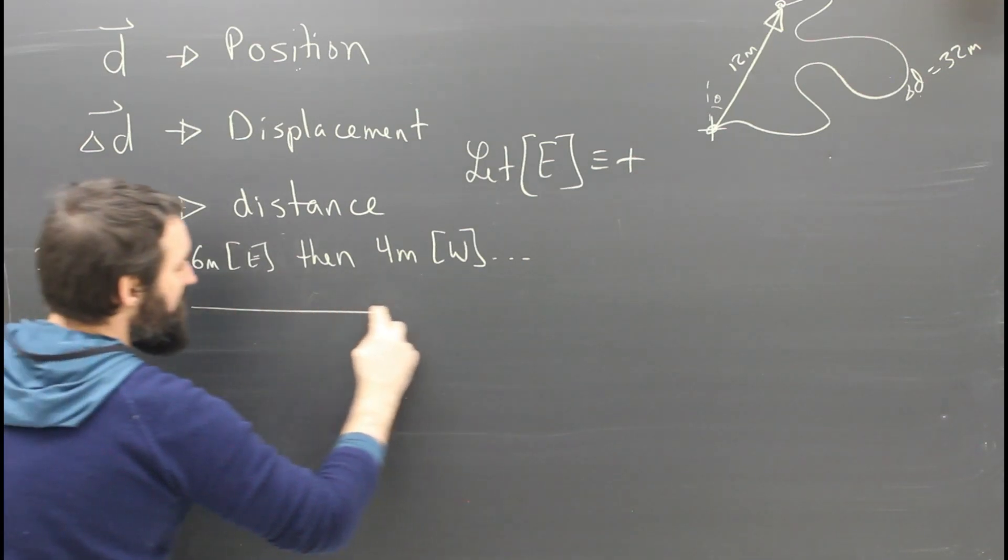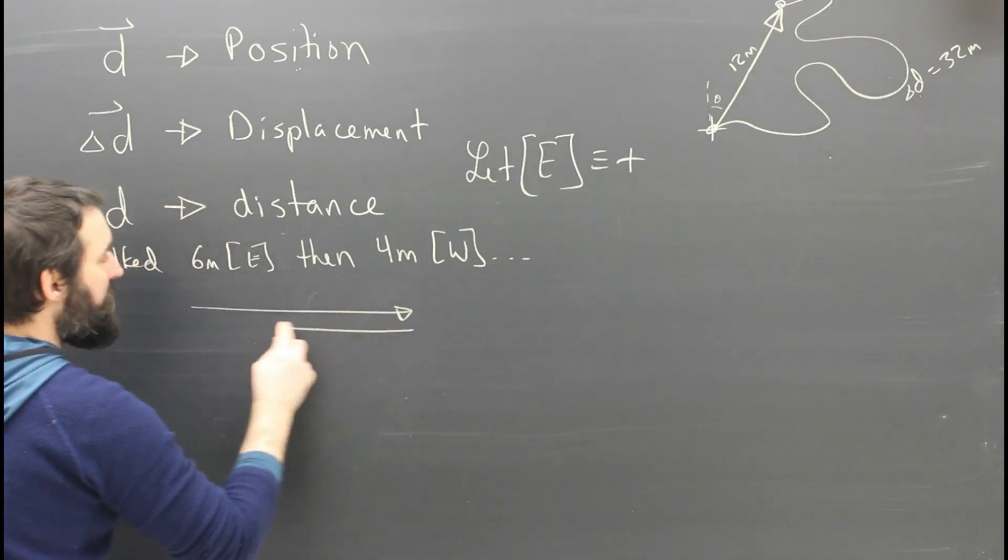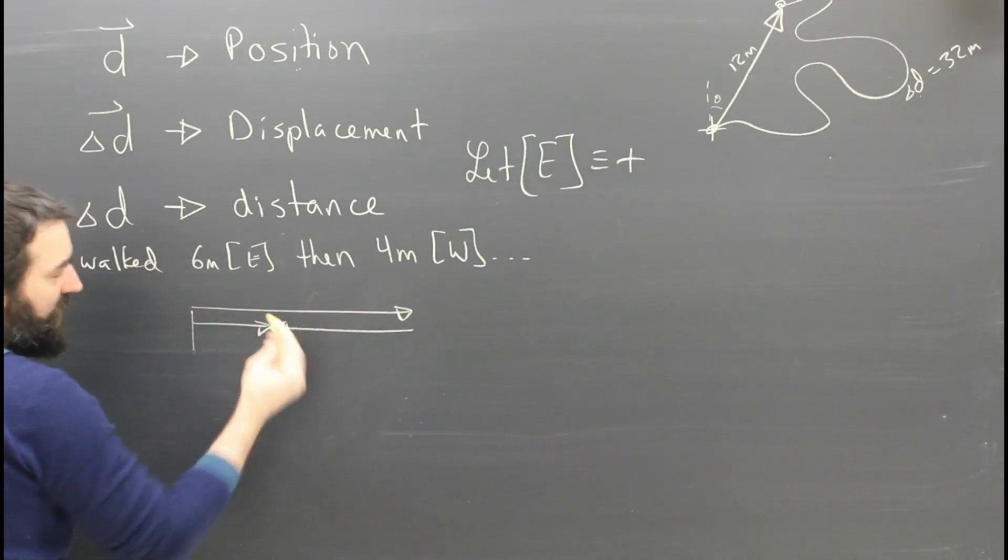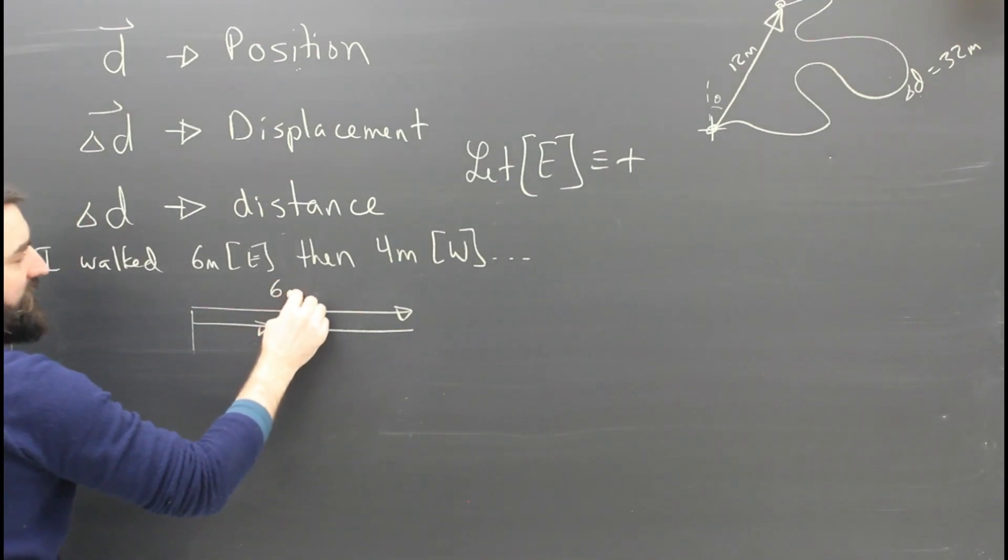Well, if I walk six meters east and then I walk four meters west, how far am I from where I started? Pretty easy, I think. Six meters east, four meters west.